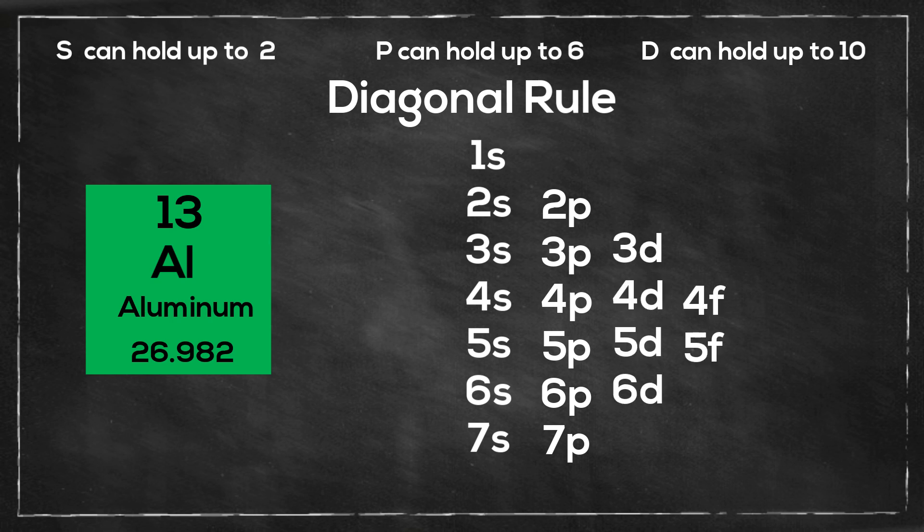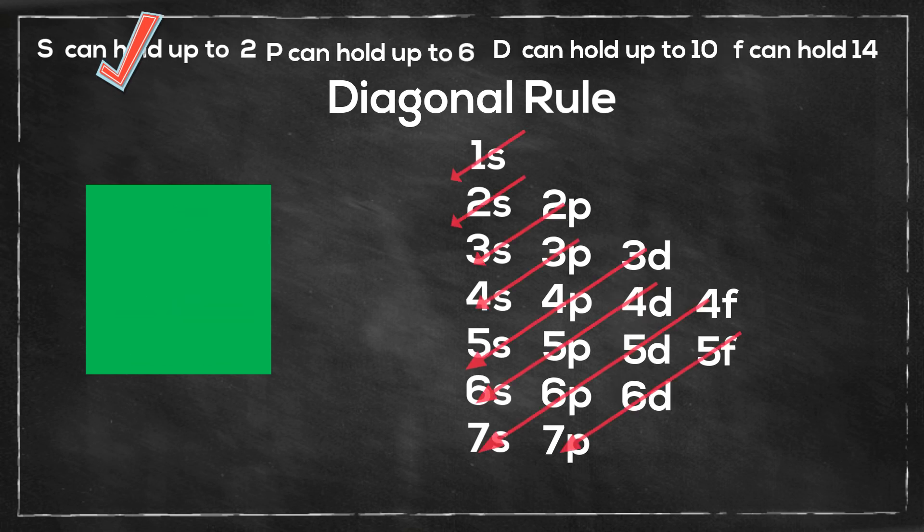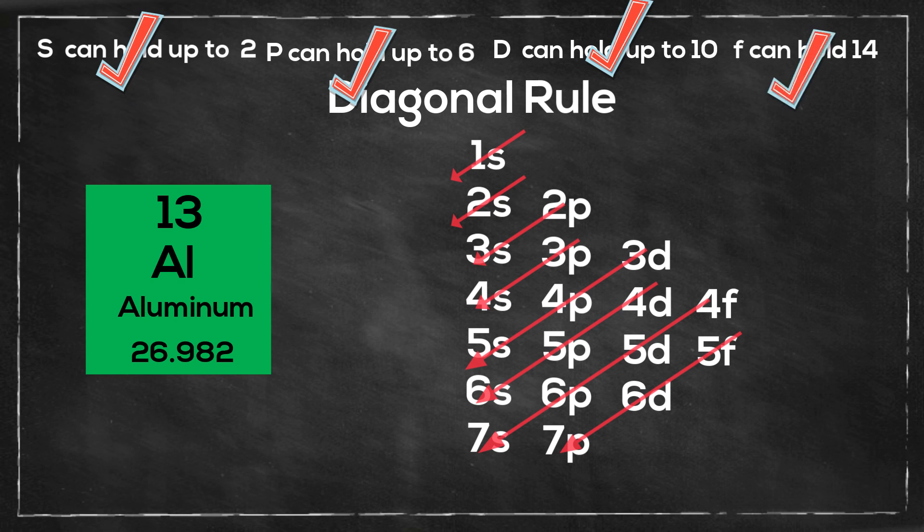The s orbital can hold up to 2, the p orbital can hold up to 6, the d orbital can hold up to 10, and the f orbital can hold up to 14, and it goes up by 4 each time.